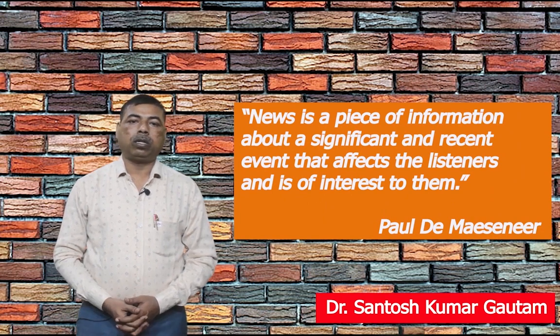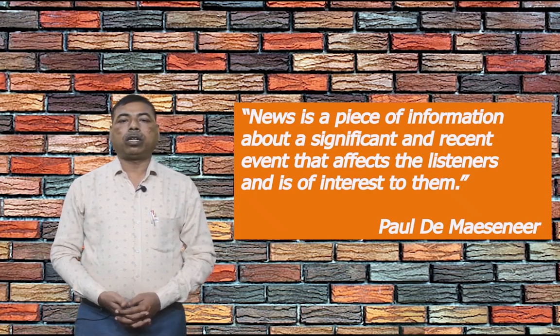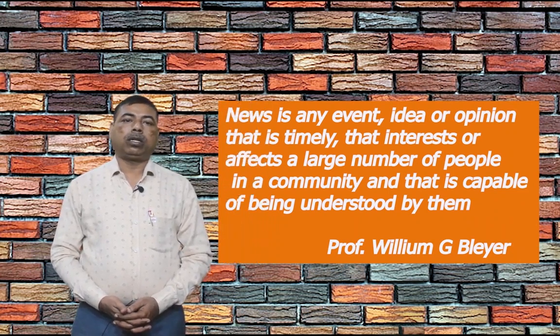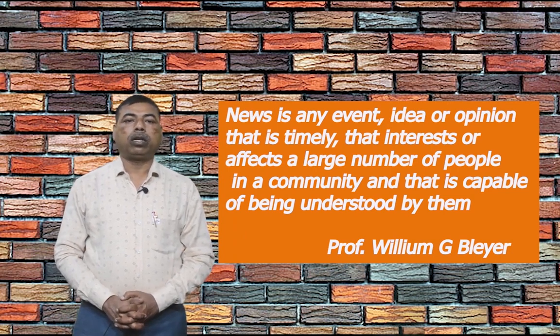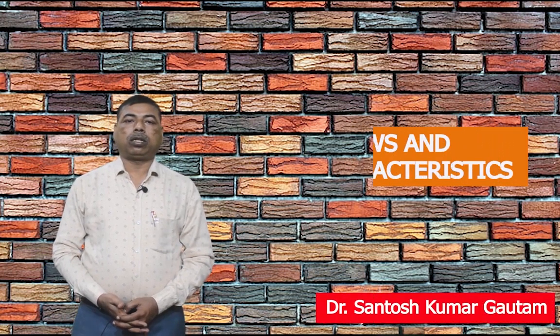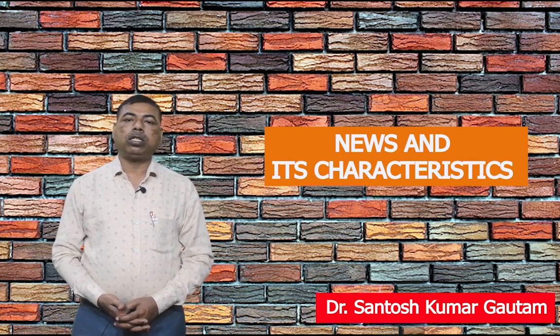Later, another famous social scientist associated with UNESCO, Paul D. Mosnier, defined news as a piece of information about a significant and recent event that affects the listeners. Another social scientist, Professor William G. Blair, opined that news is any event, idea or opinion that is timely, that interests or affects a large number of people in a community, and that is capable of being understood by them. The word NEWS is derived from four cardinal directions — North, East, West and South — hence some say that information coming from all directions of the world is called news.